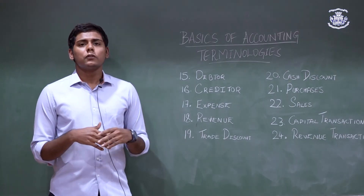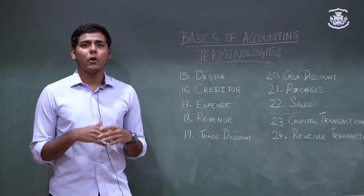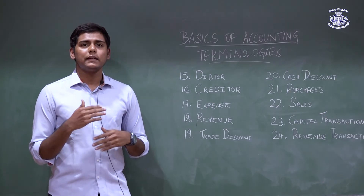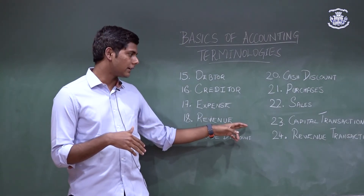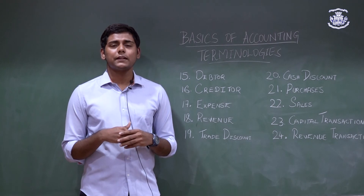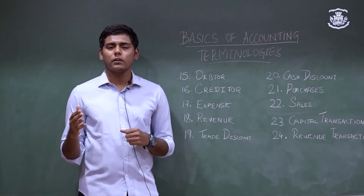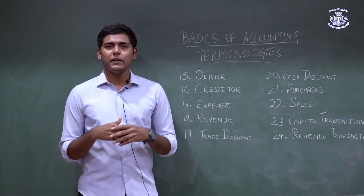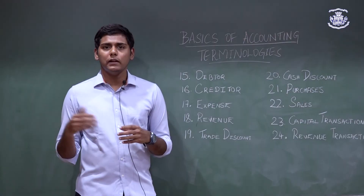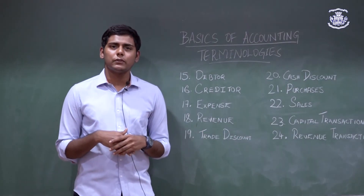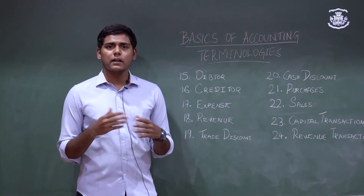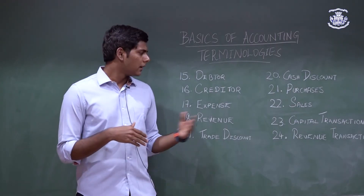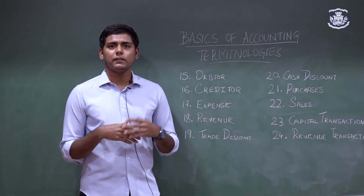Capital transactions are transactions that are non-recurring and long-term in nature — usually transactions that do not happen every year, such as the purchase of machinery or the sale of a building. Revenue transactions are transactions that are recurring and short-term in nature — transactions that happen every year, for example, salary paid or interest received.